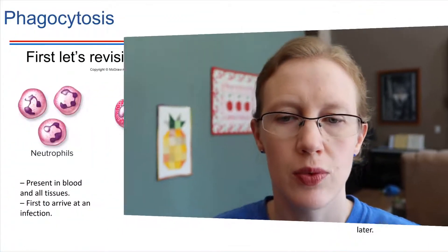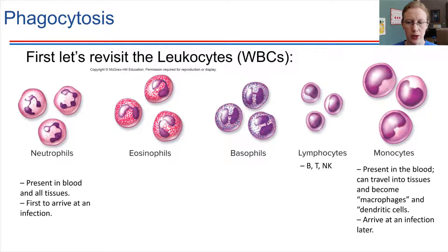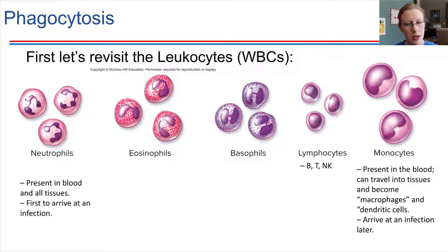Before we talk about phagocytosis, let's get a reminder going for white blood cells. What you're seeing on the screen here, these are all white blood cells that you were introduced to back when we were talking about blood. However, we didn't go into detail on any of these. We just kind of said that these are present in the blood. So let's take a look now in a bit more detail. Leukocytes are the white blood cells, and we're showing you the major types right here.